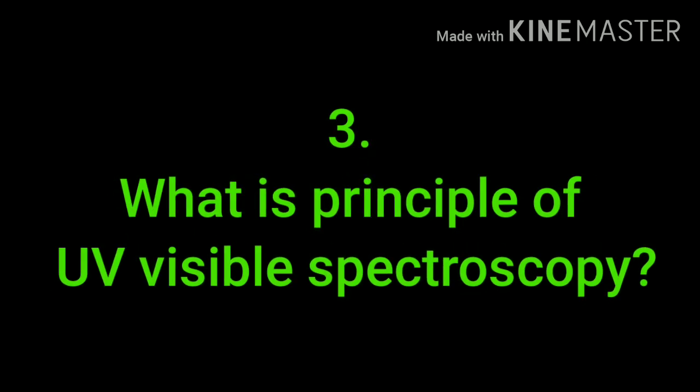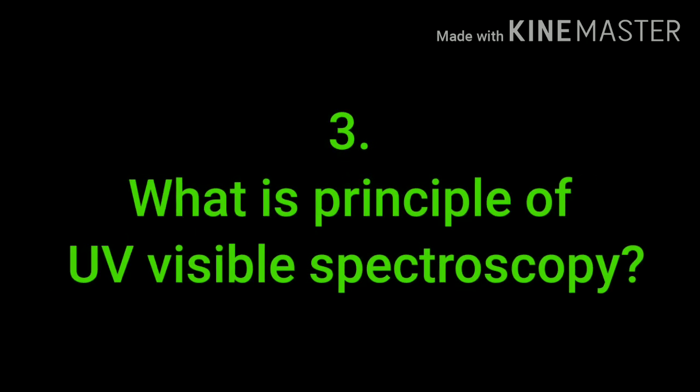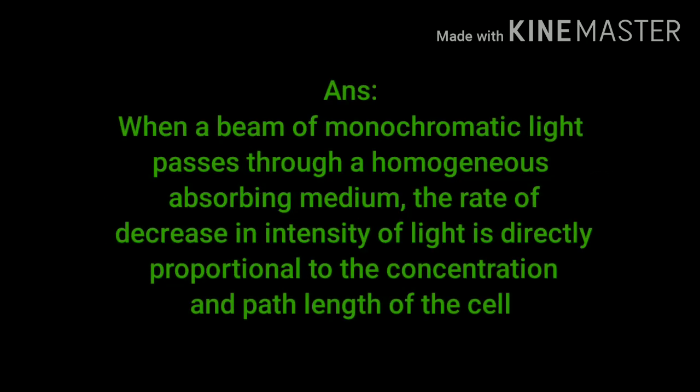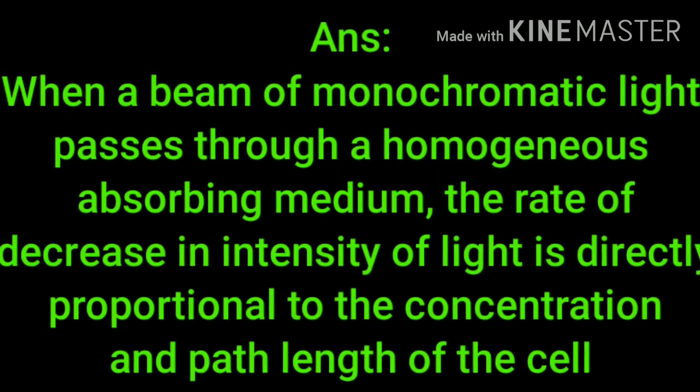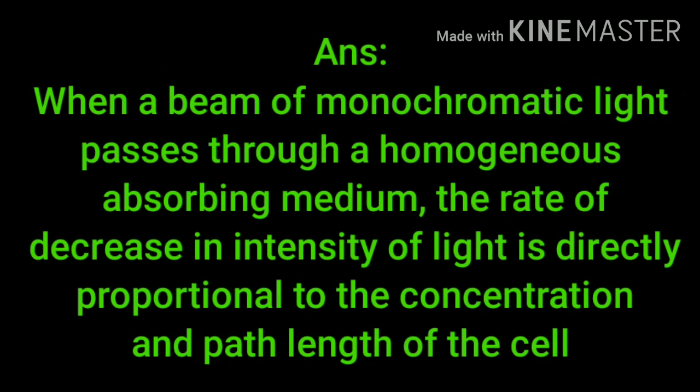What is the principle of UV-Visible spectroscopy? When a beam of monochromatic light passes through a homogeneous absorbent medium, the rate of decreasing intensity of light is directly proportional to the concentration and path length of the cell.